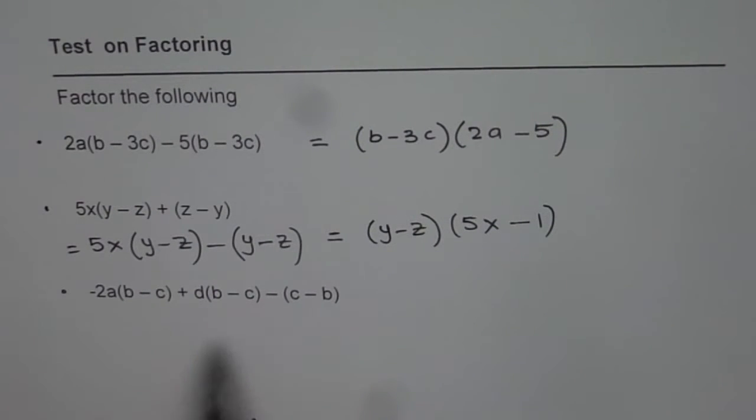This time we have three terms but very similar to the previous one. You can pause the video, factor this one, then look into my solution. So we have a common factor here b minus c, b minus c. But this one is c minus b. Let's make it b minus c by changing the sign. So we will do that.